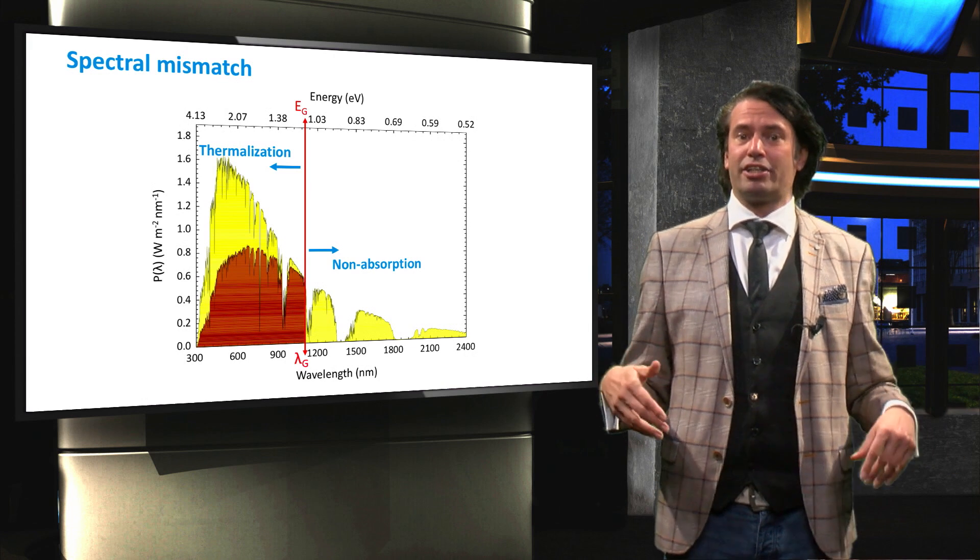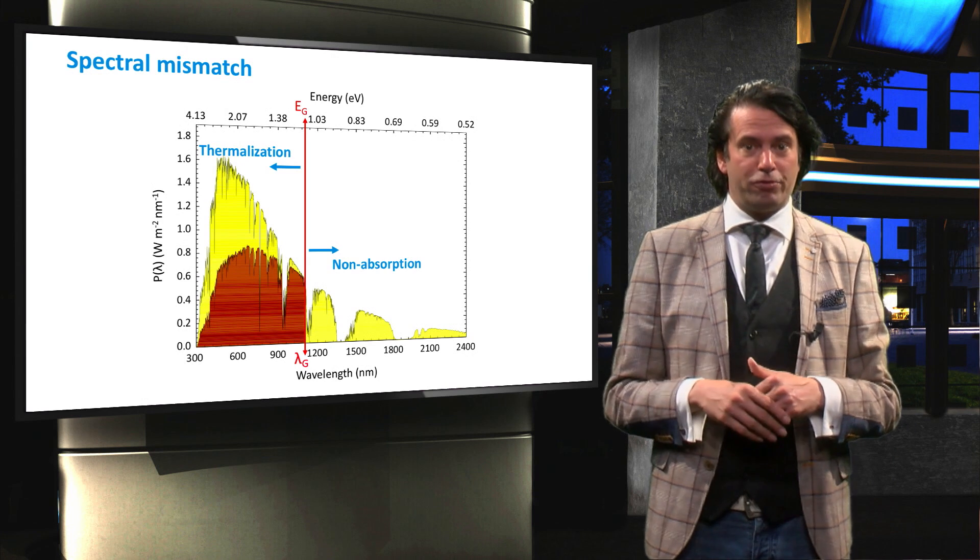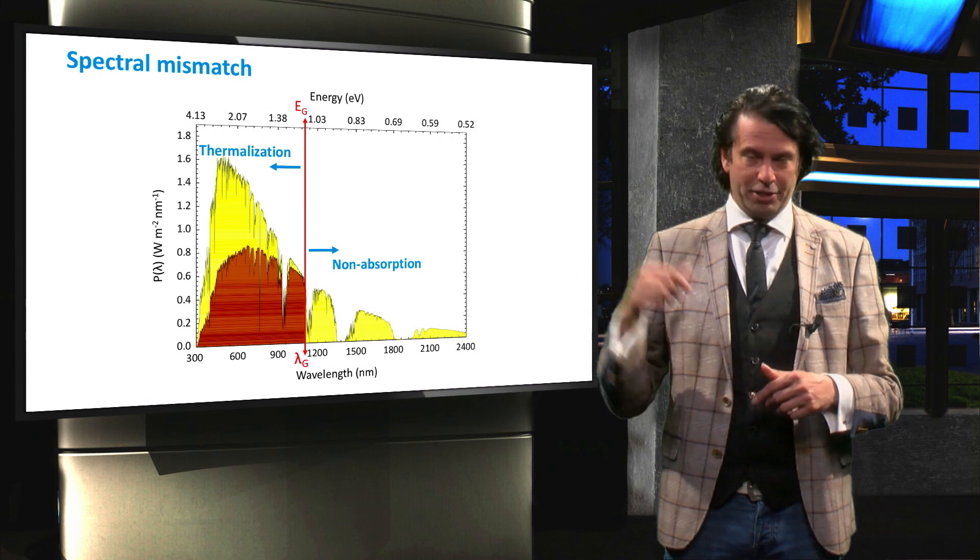A single junction crystalline silicon solar cell can therefore only use the fraction of the AM1.5 spectrum indicated by the brown area. The spectral utilization strongly limits the conversion efficiency of a solar cell.